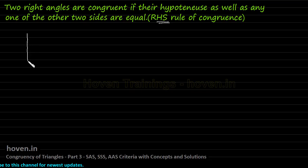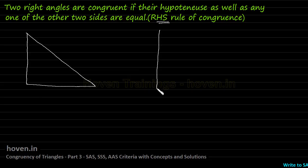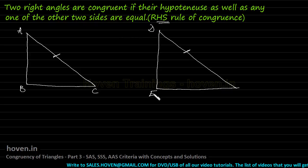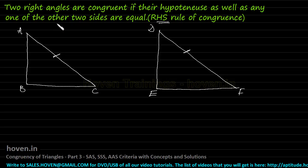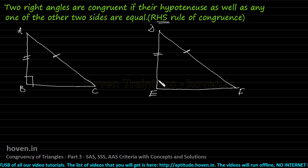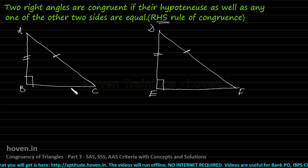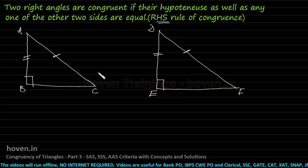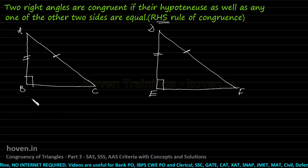Let us now prove the truth of the RHS rule of congruency. Suppose we have two right-angle triangles — let me mark them as A, B, C and D, E, F. The hypotenuse must be equal, and any one of the other two sides. Let us suppose AB also equals DE. Both are 90-degree triangles. If hypotenuse is equal and any of these other sides become equal, then we say the triangles are congruent.